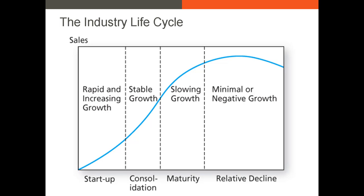Next we have the maturity stage, where we typically see slowing growth in terms of sales and profit. A lot of the big blue chip companies we often talk about are going to be in this maturity stage — they are very large but slowly growing, maybe at 3% or 4% per year. They might be making acquisitions to try and increase that growth rate.